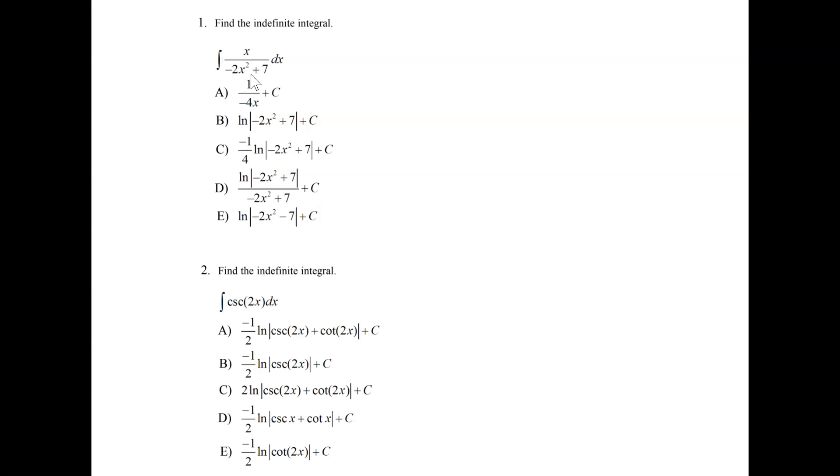we're doing the indefinite integral of x over negative 2x squared plus 7. And so in this case, as you look at this, we can't apply the power rule. This is not a derivative that we're familiar with, and there's no composite function, and so I would attempt a u-substitution for that denominator.